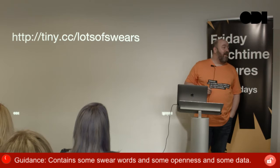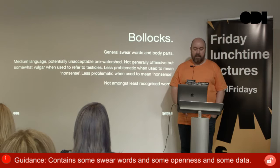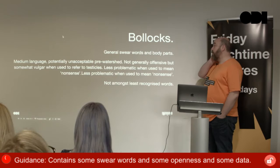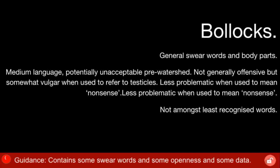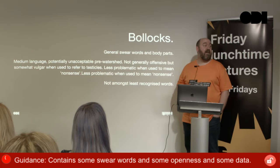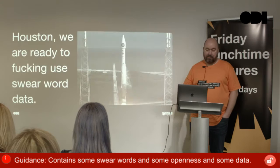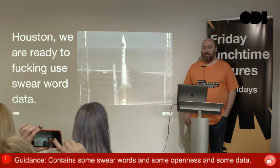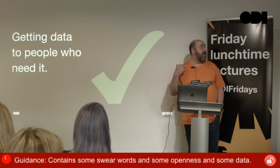The data, you can find it at tiny.cc/lotsofswears. That will take you to the data prepared by Ofcom and Ipsos Mori with a list of swear words. Notice I was looking at bollocks: it's a general swear word about body parts, medium offensiveness, potentially unacceptable pre-watershed. Not generally offensive, somewhat vulgar when used to refer to testicles, less offensive when used to mean nonsense. Lots of us know that word, we know what it is, we know its context. At that point I'm going: great, we're ready to use some swear word data. That's really what it's about — getting the data used. It's part of our mission, getting data to people who need it.